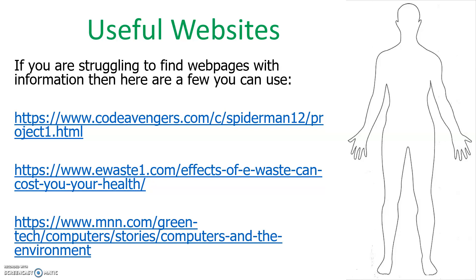Here are three web pages I found quite useful: Code Avengers was one, an e-waste site was another, and MNN — I think it stands for Mother Nature Network — was another. Also remember that some web pages just list the types of materials used, so they might mention cadmium or beryllium, and you'll need to search those words specifically to find their impact on the body. At the very least, you could search the five words we spoke about: lead, mercury, arsenic, beryllium, and cadmium.